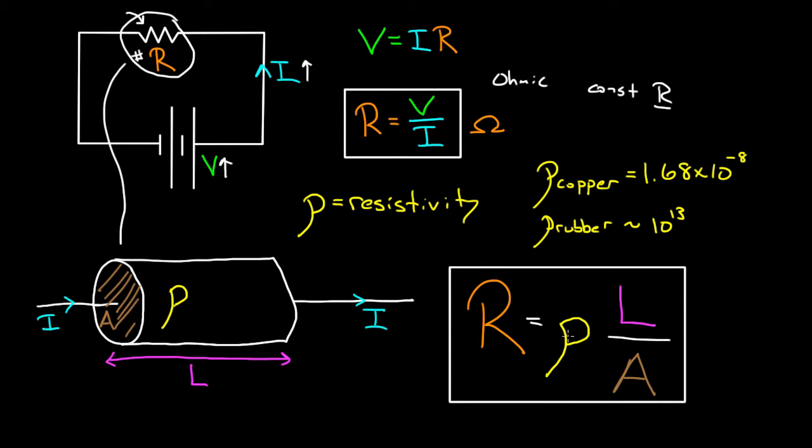So what are the units of resistivity? Well I can rearrange this formula and I can get that the resistivity equals the resistance times the area of the resistor divided by the length. And so that gives me units of ohms times meters squared, because that's area, divided by meters. And so I end up getting ohms. One of these meters cancels out. Ohms times meters. Those are the units of these resistivities, ohm meters.